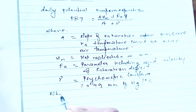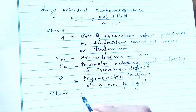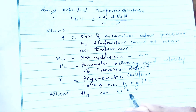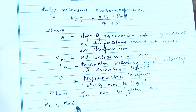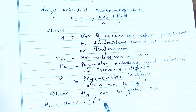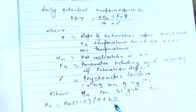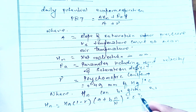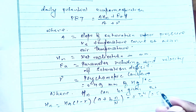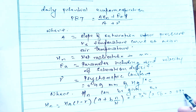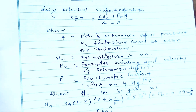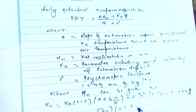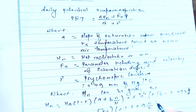The net radiation Hn can be given as: Hn equals Ha × (1 − r) × (a + b × n/N) minus σ × Ta⁴ × (0.56 − 0.09 × √Ea) × (0.1 + 0.9 × n/N), where the various terms represent incoming solar radiation adjusted for albedo, sunshine fraction, and outgoing longwave radiation.